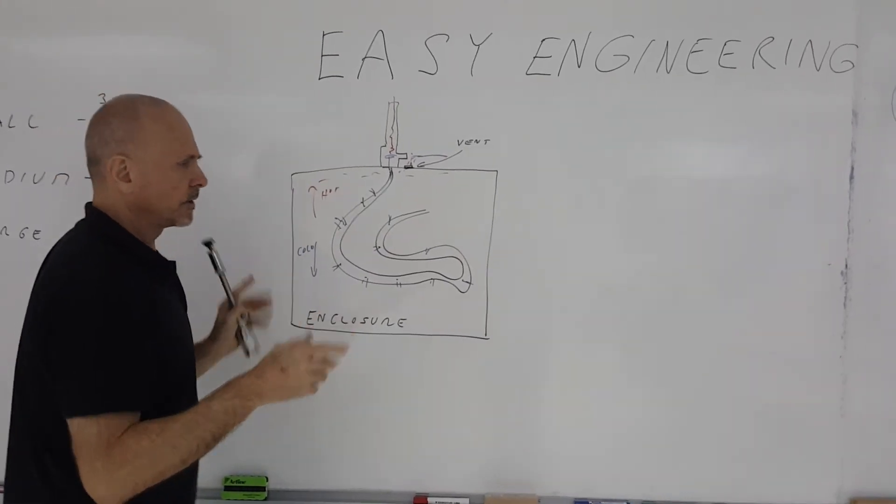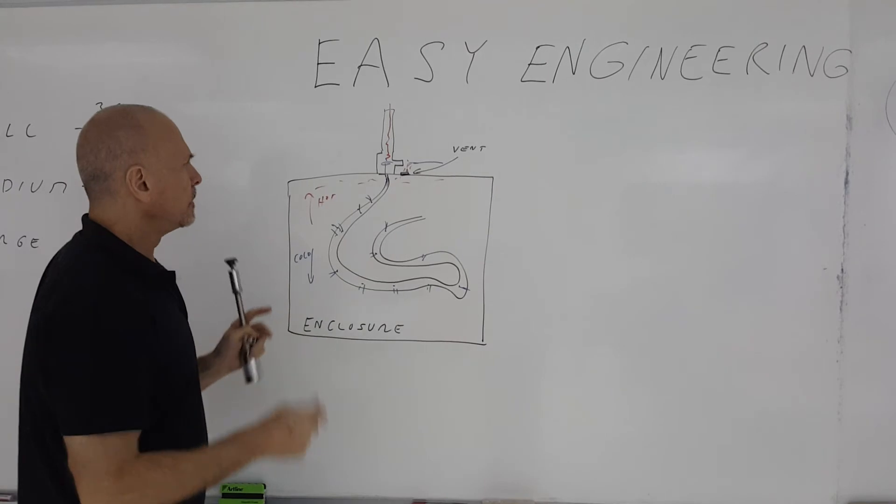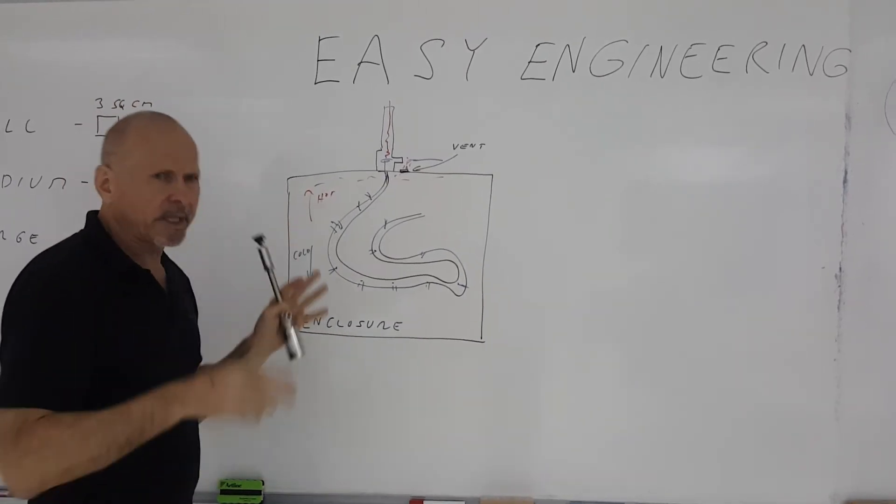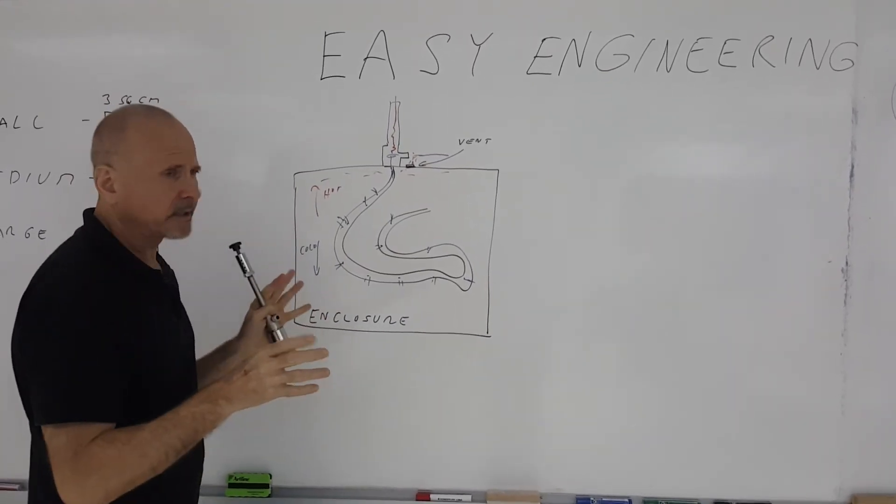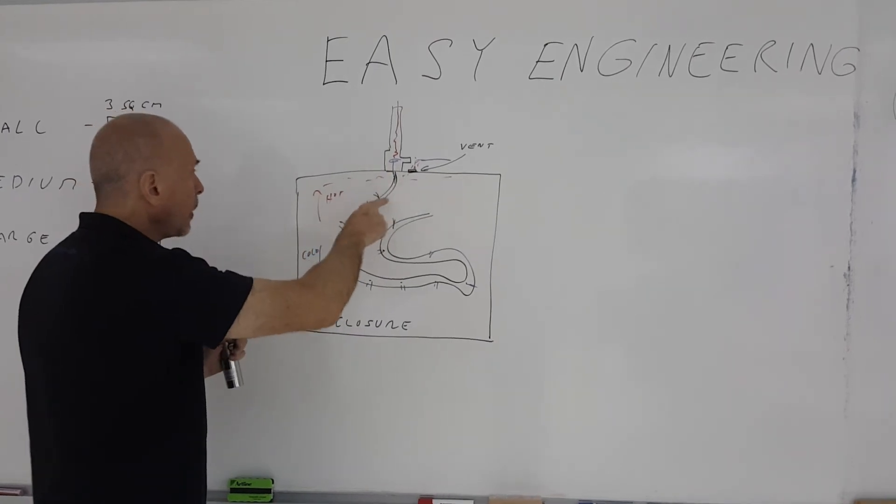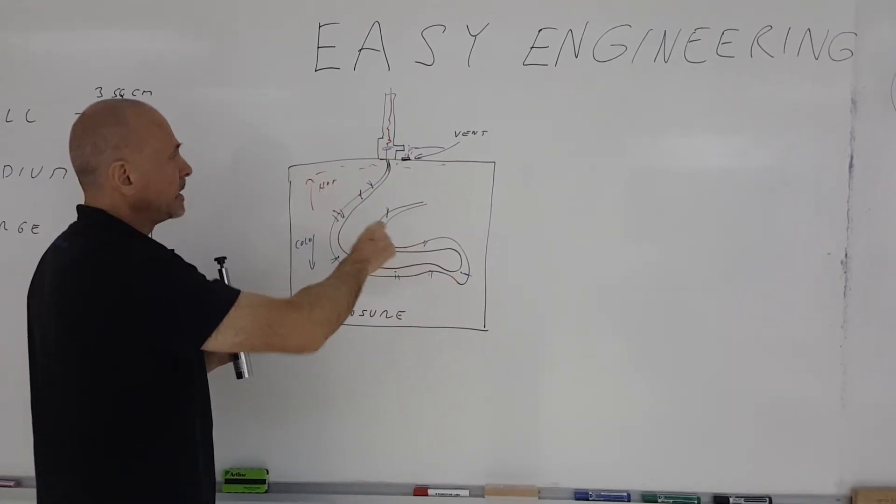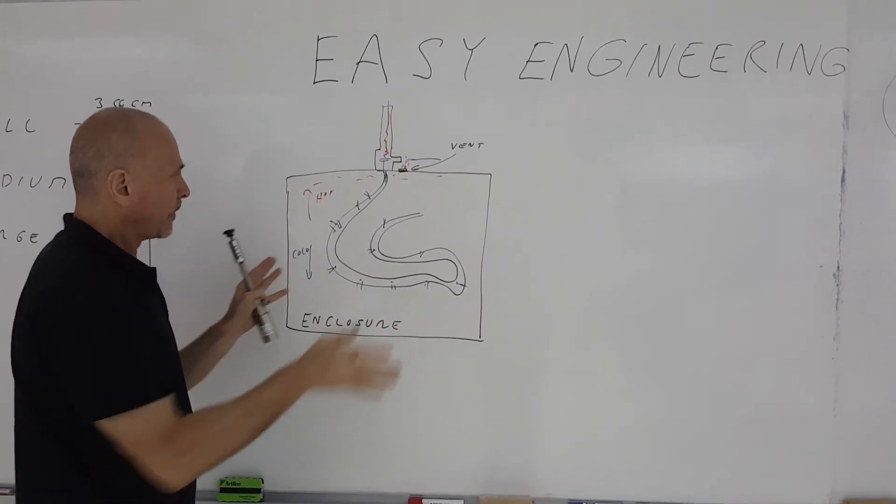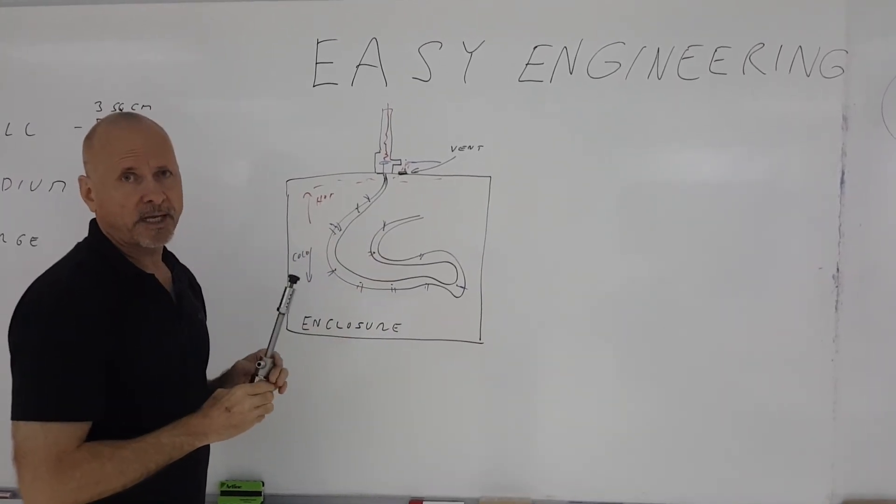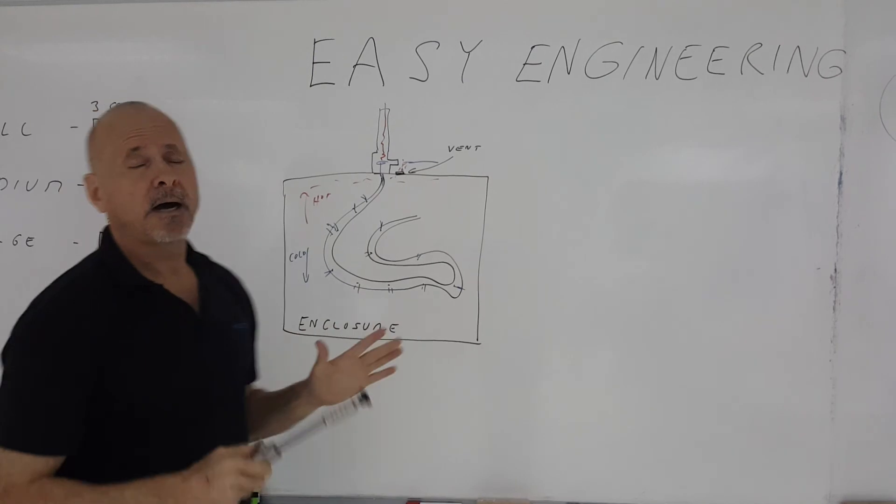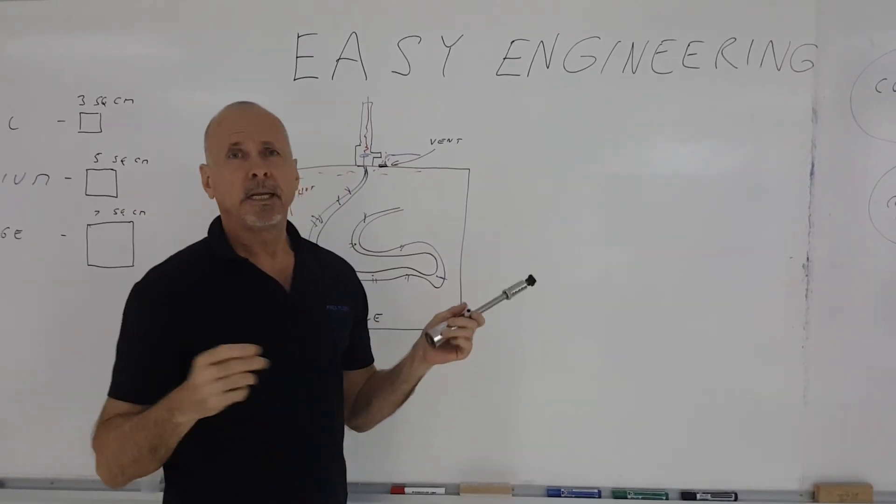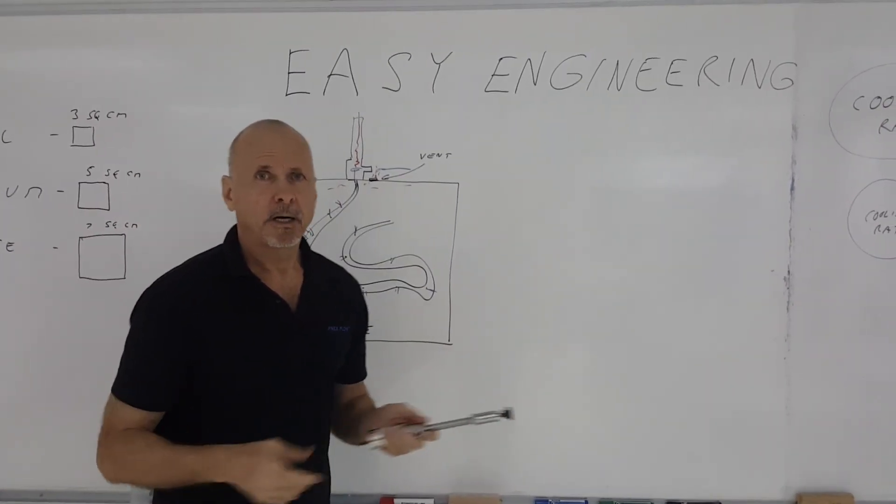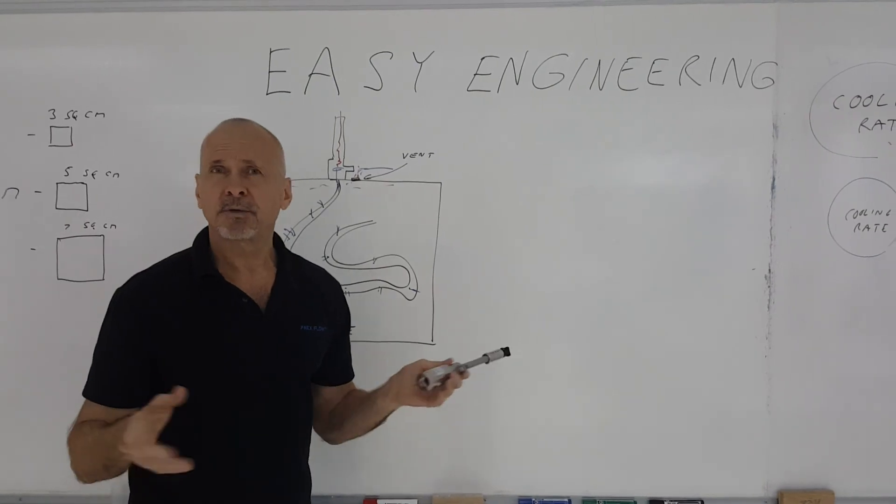A very big enclosure could take a long time to cool unless you distribute that cold air more effectively. The best way is just to have a hose at the end of the vortex tube on the inside. The hose has holes poked in it, spreading that cold air throughout the enclosure a lot faster. And that is how you use a vortex tube in an application. On Easy Engineering, we'll move on to a different product.